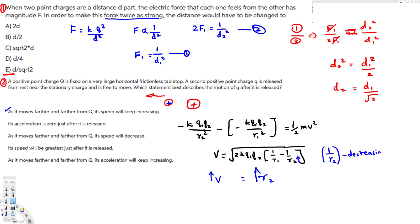Looking at the answer choices: 'its acceleration is zero just after release' — not true. 'As it moves further its speed will decrease' — not true, we found it increases. 'Its speed will be greatest just after it's released' — not true, speed starts at minimum and increases as it moves away.